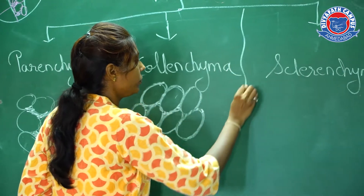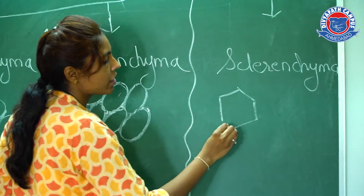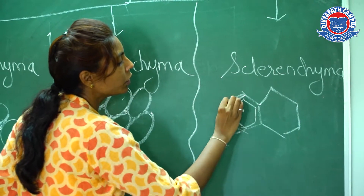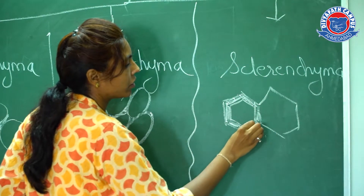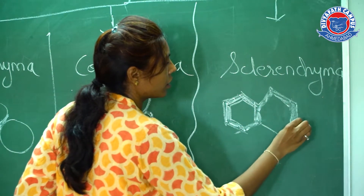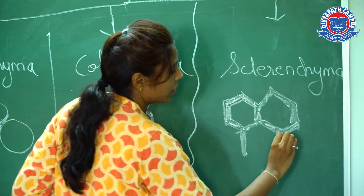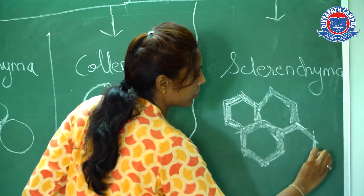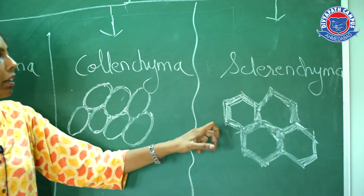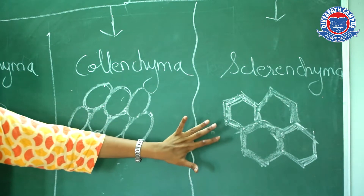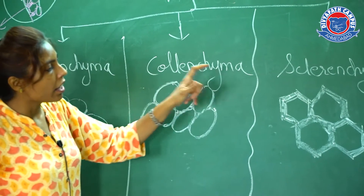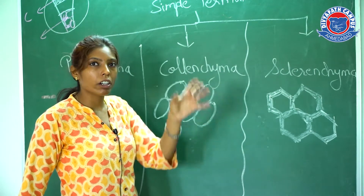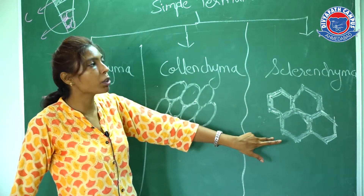If I talk of sclerenchyma, these are generally hexagonal cells with a deposition of lignin. Because of this lignin deposition, there is mechanical strength. The difference between sclerenchyma and the other two cell types is that parenchyma and colenchyma are living cells, but sclerenchyma is a dead cell — it is needed only for mechanical strength. These are present in the vascular cambium and in the trunk of large plants, where the trunk part is very thick and hard because of this sclerenchyma.